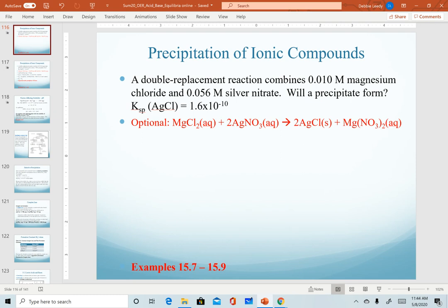For this video we're going to start with one more practice calculation determining the precipitation of ionic compounds. Here we have a double replacement reaction where we're combining magnesium chloride and silver nitrate. We want to know if a precipitate is going to form.